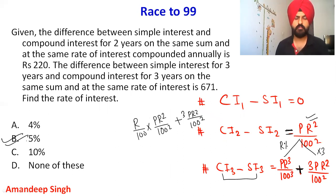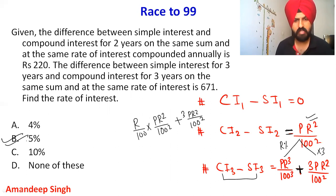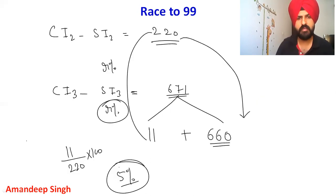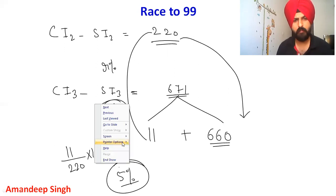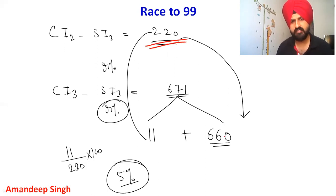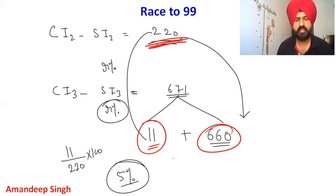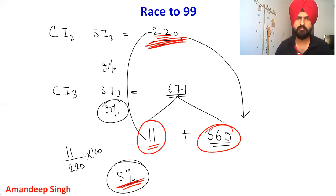The remaining amount is 671 − 660 = 11. This remaining part equals R% of the two-year gap: R/100 × 220 = 11, so R = 5%. The answer is 5%. The three-year difference formula has two parts: 3 times the two-year difference, plus R% of the two-year difference. This is how you solve this question.